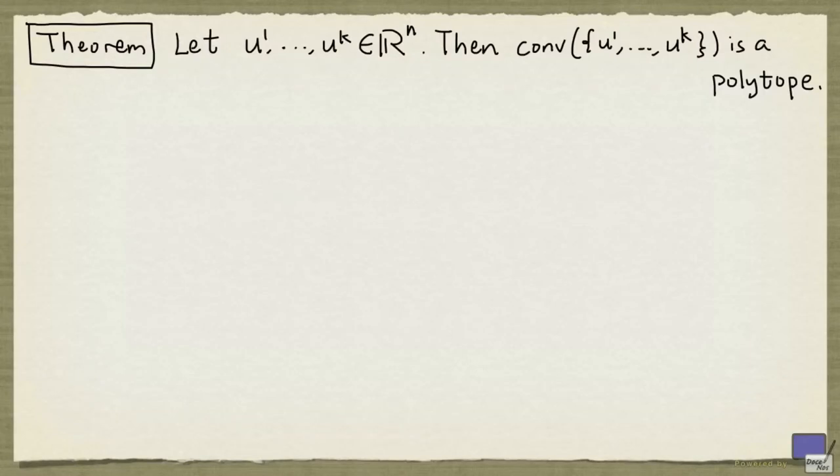We have seen that a polytope is the convex hull of its extreme points. A question therefore arises: is the convex hull of a finite number of points in R^n a polytope? And the answer is yes.